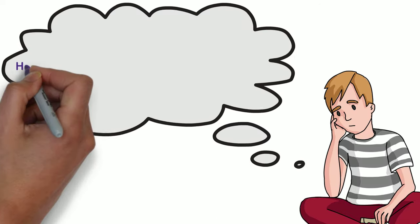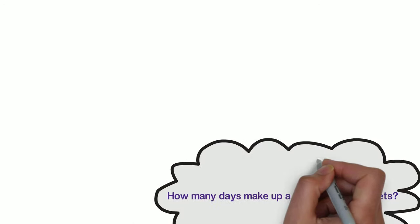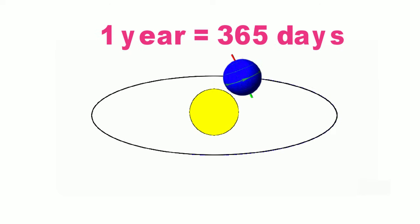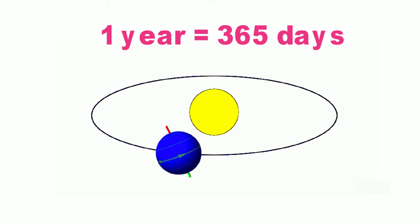Have you ever wondered how many days make up a year on other planets? For us, one year has 365 days because Earth takes 365 days to complete one orbit of the Sun.